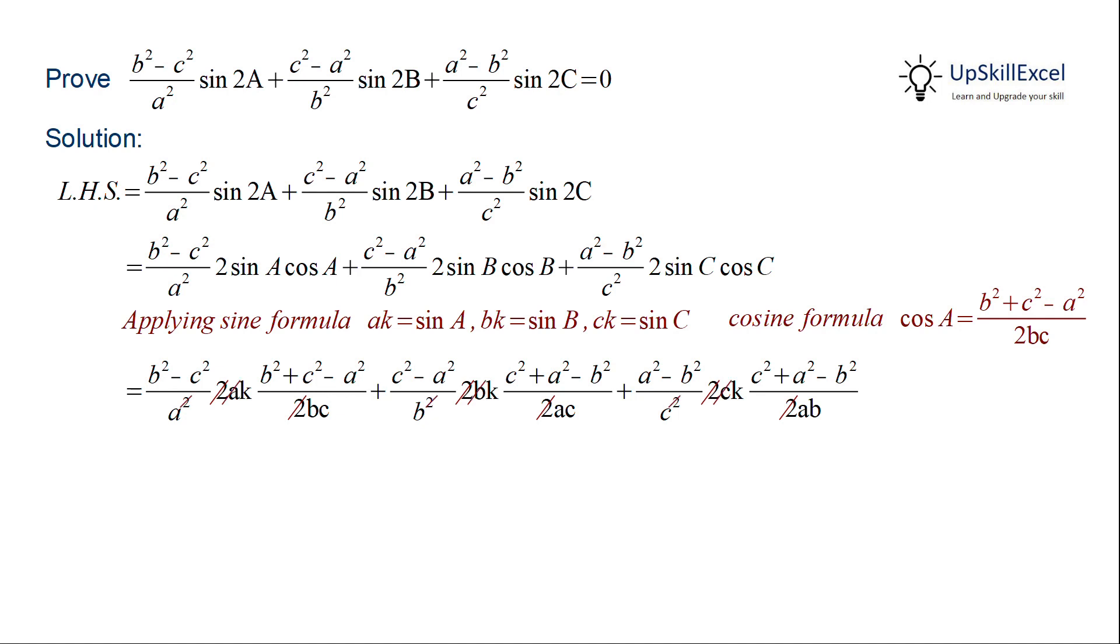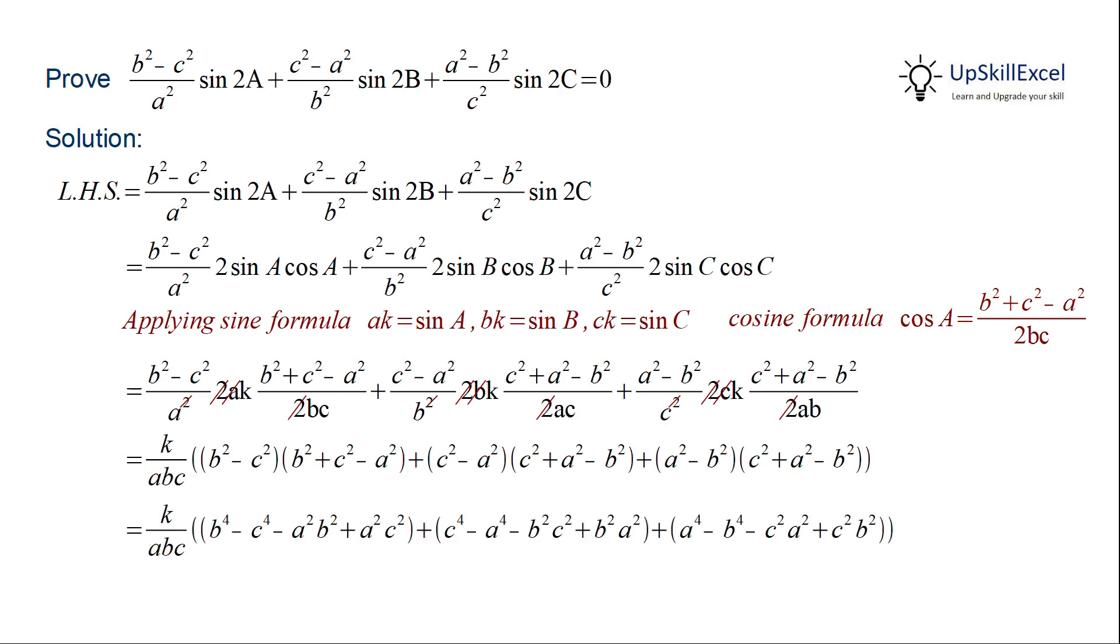Then we can take k by abc common and then continuing with the multiplication of the remaining terms and simplification we get 0.